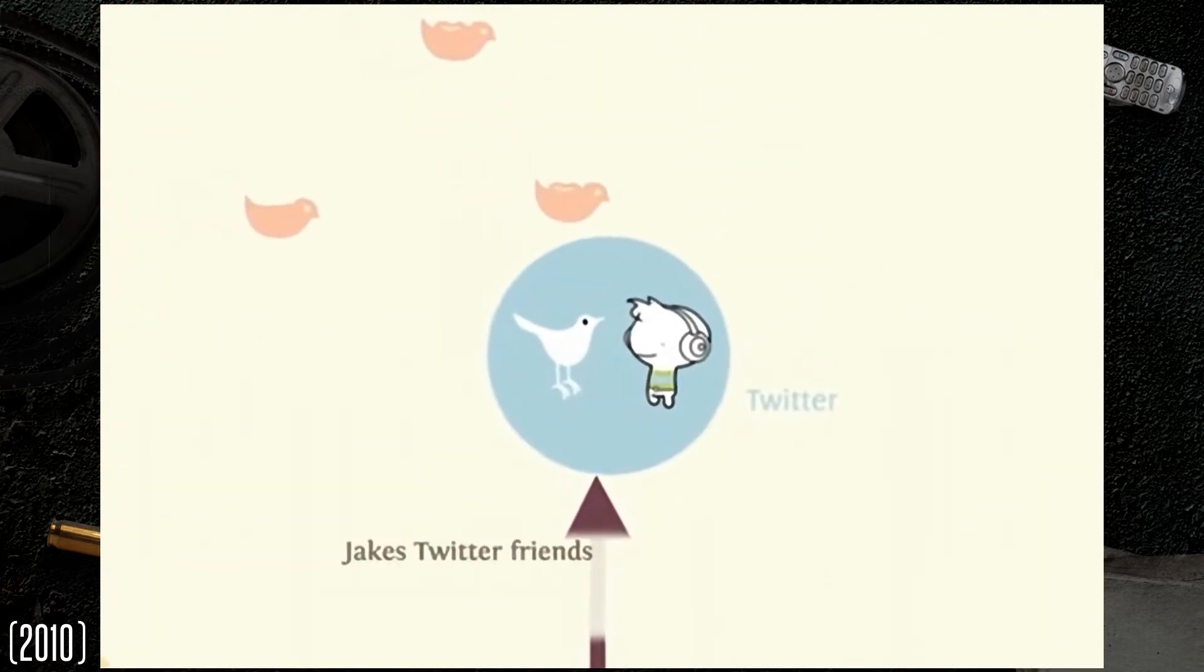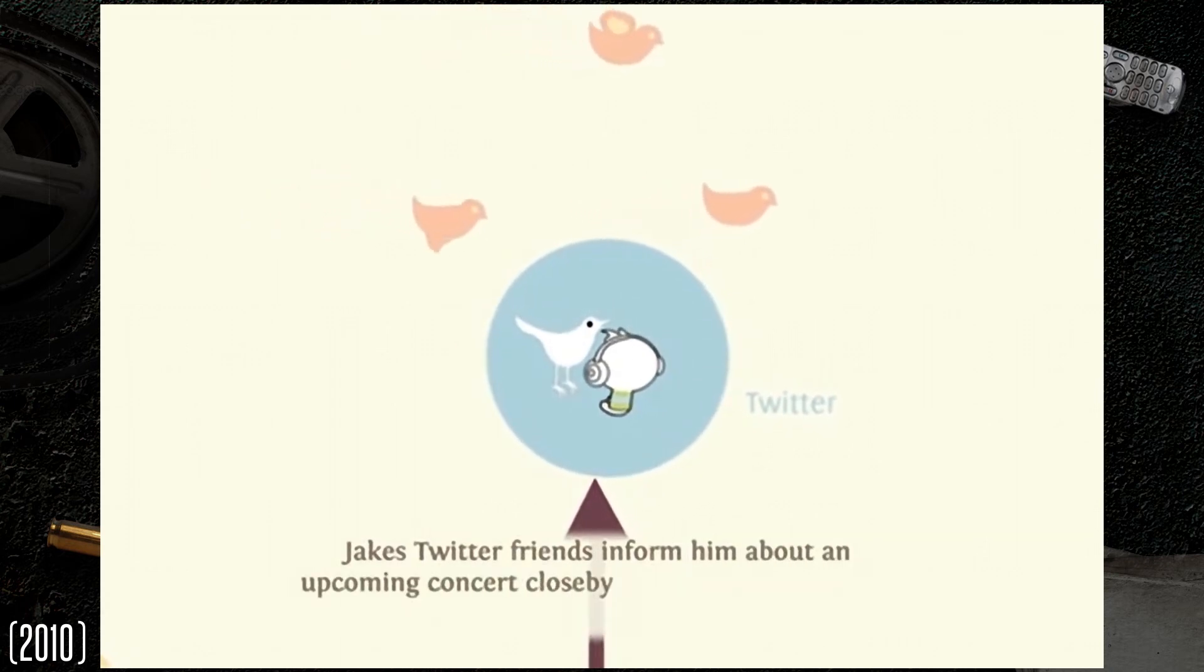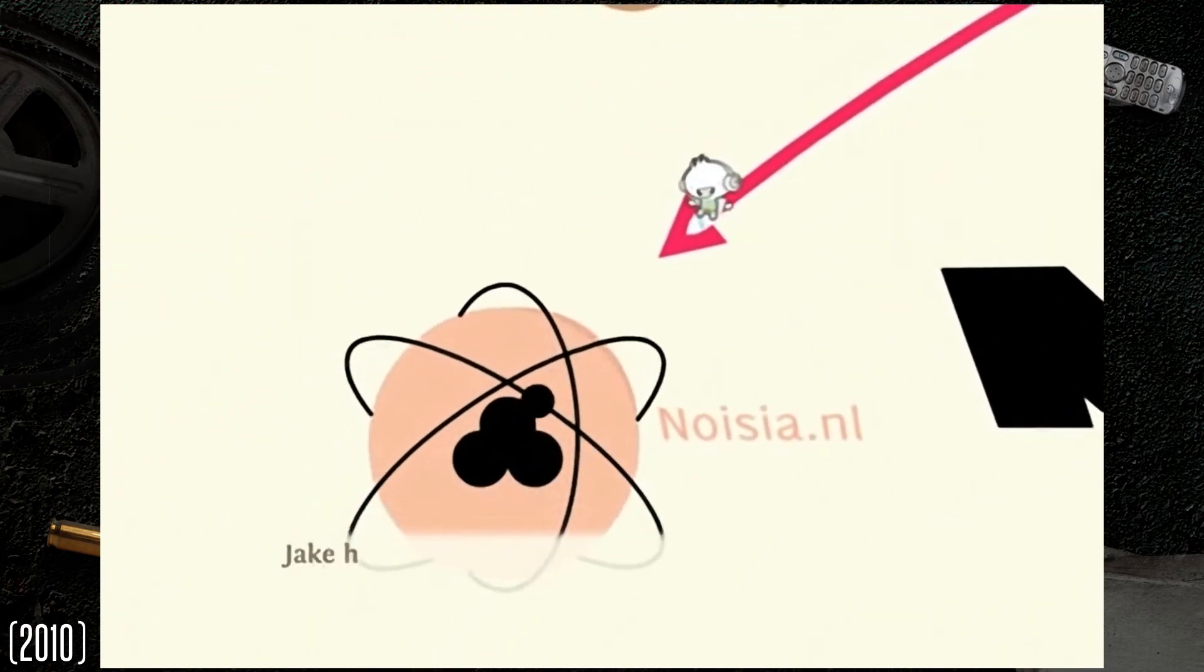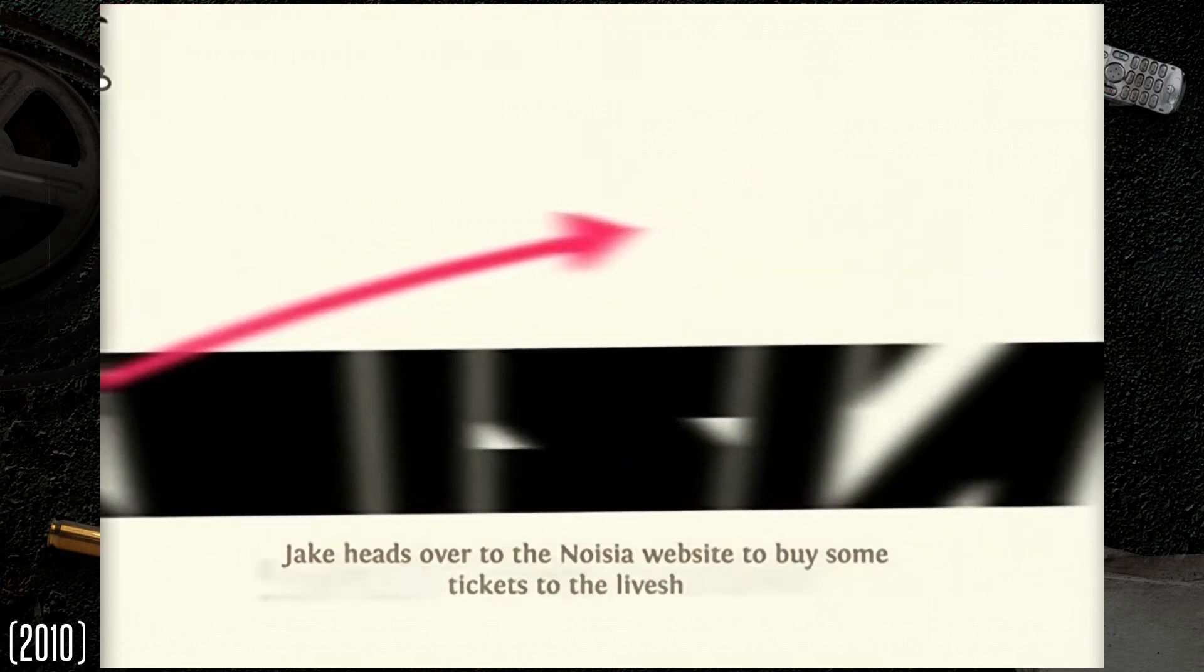Jake's Twitter friends inform him about an upcoming concert close by. He gathers a couple of friends so they can go together. Jake heads over to the Noisia website to buy some tickets to the live show.